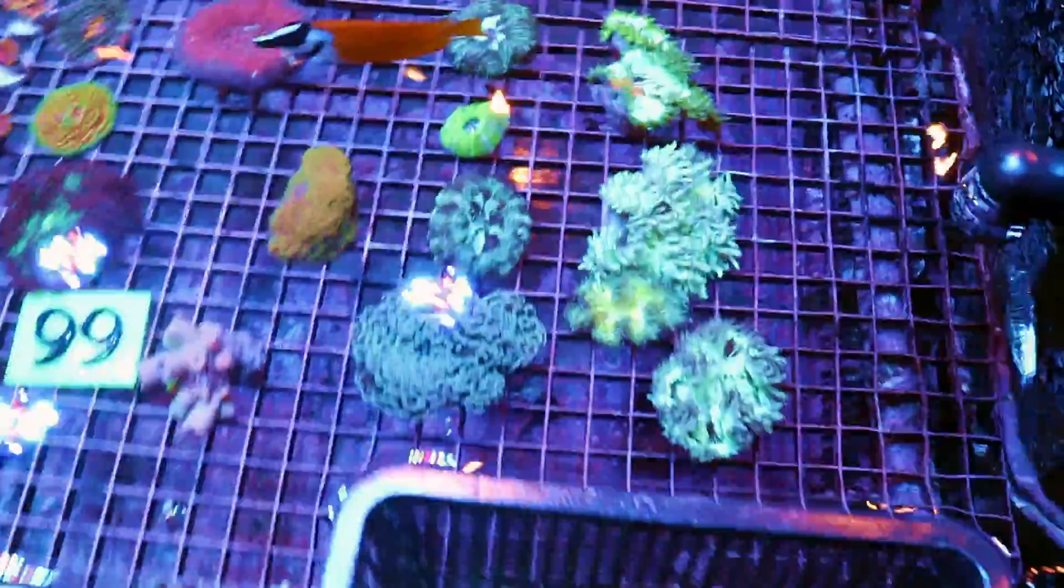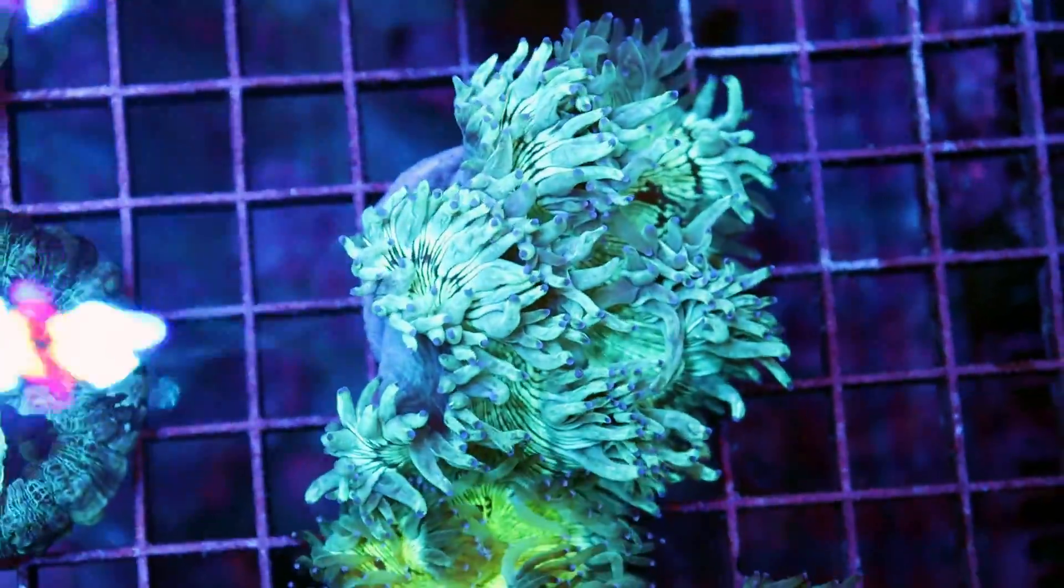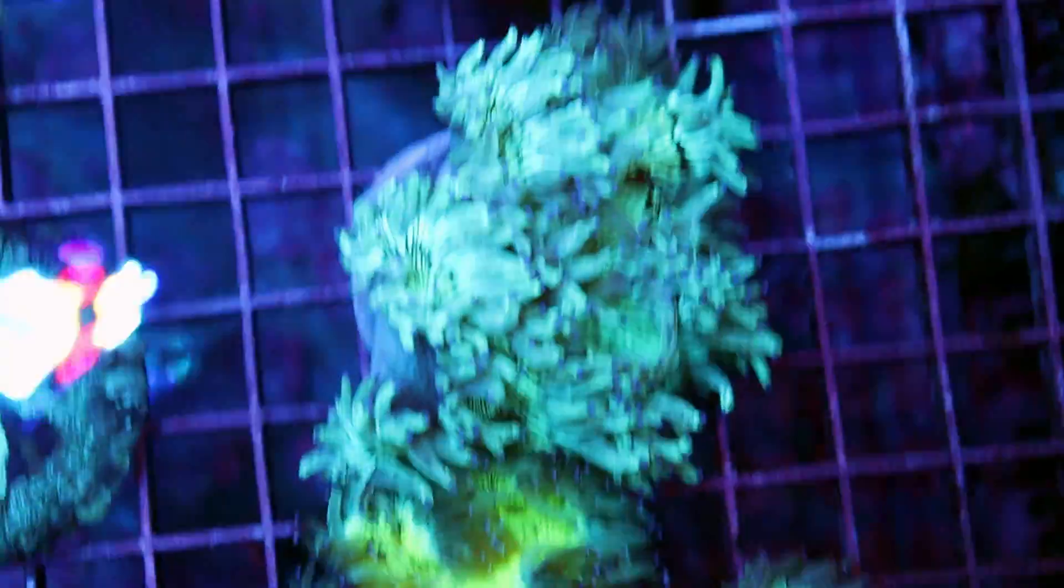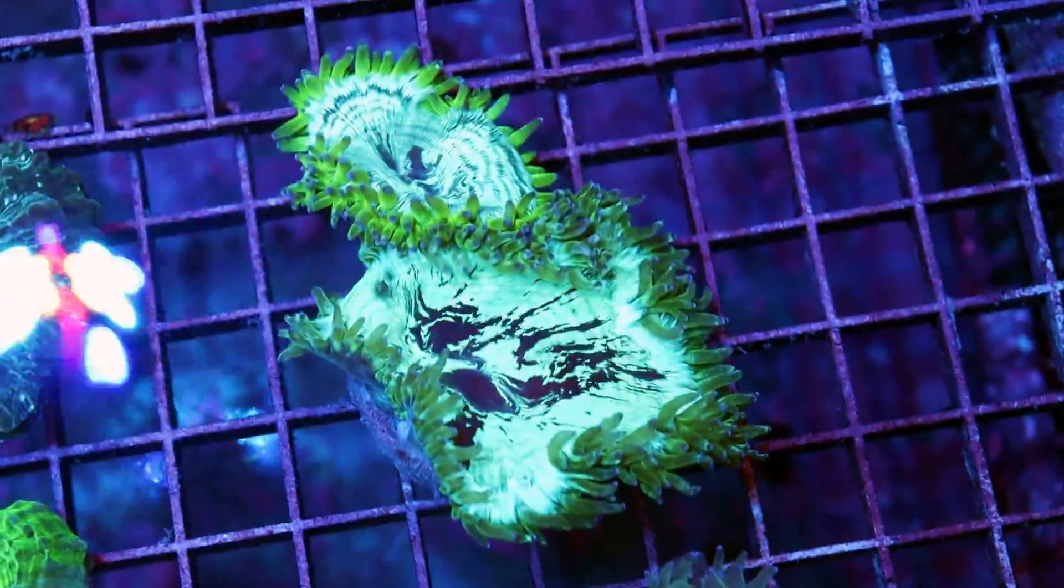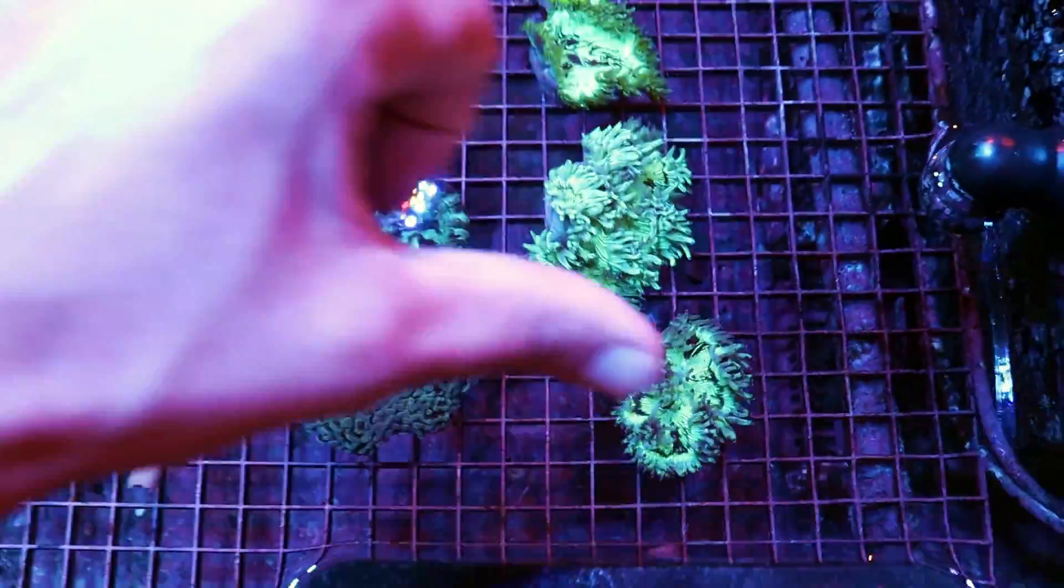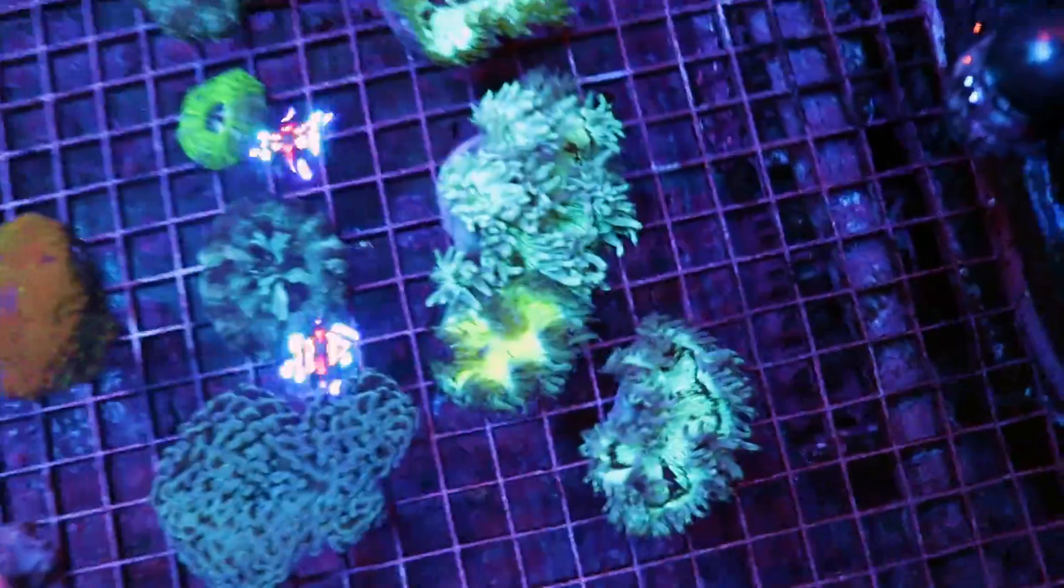Got some nice elegance corals in over here. This is the Cataphilia Jardinae. I don't know how to pronounce it, but elegance, that's what we call these. And they're kind of on the smaller side, which is nice actually if you have a smaller tank. Sometimes we get elegance in that are like the size of footballs, like 10 inches across. These are probably about 2 inches from side to side.